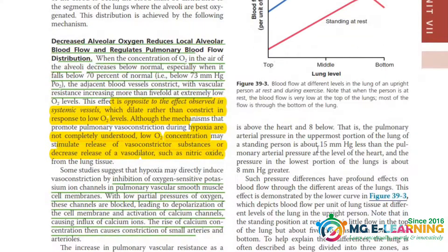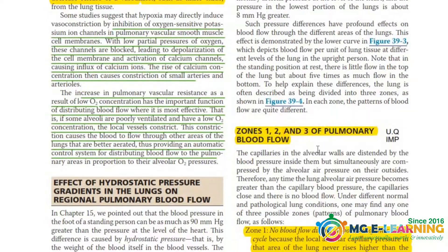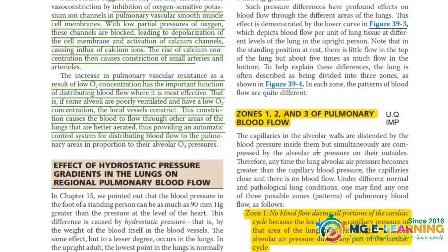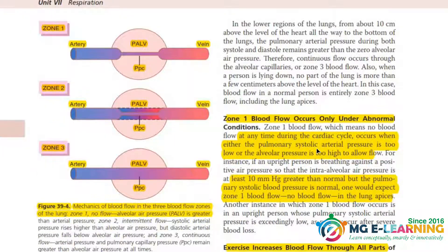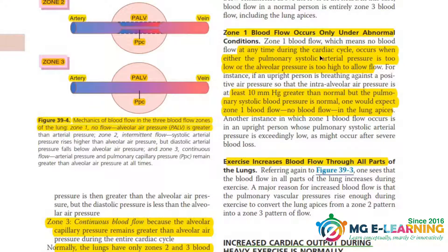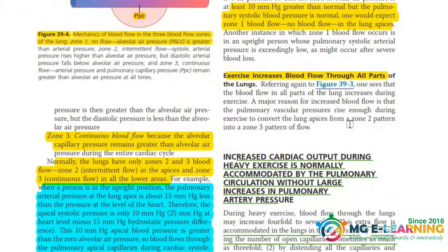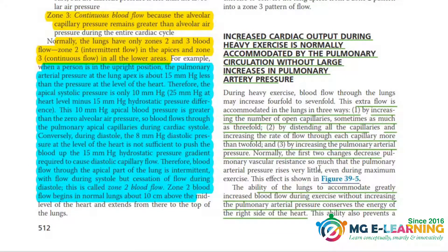The next very, very, very important topic of this chapter is the zones — the zones of pulmonary blood flow. These are very high yield; they come in your vivas and it is also a previous university question. You have to memorize it along with the diagram, very thoroughly. Write all three zones with explanation, and also cover the example under abnormal conditions. This topic is important for both MCQs and SCQs.